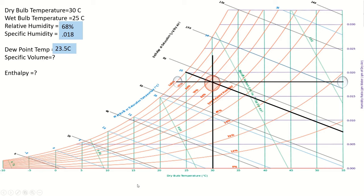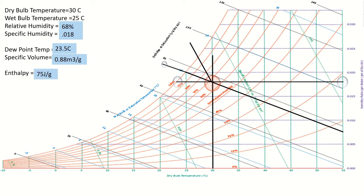For specific volume: drawing a line parallel to the specific volume lines (0.80, 0.85, 0.90, 0.95), the intersection falls between 0.85 and 0.90, nearest to 0.90, so specific volume is around 0.88 m³/kg. For enthalpy: drawing a parallel line to the enthalpy lines toward the enthalpy scale, the value falls between 60 and 80 joules per gram, very nearest to 80, so enthalpy is approximately 75 joules per gram.